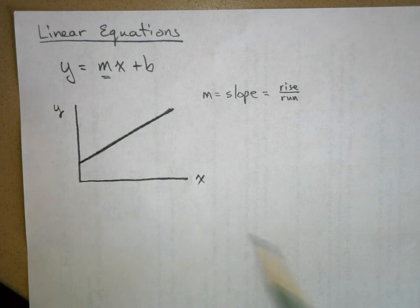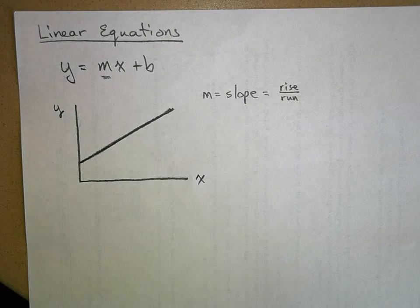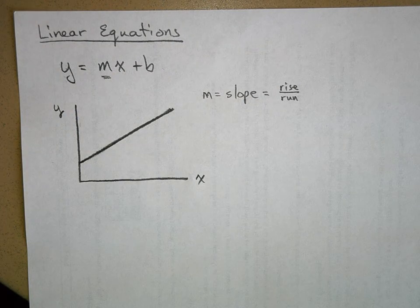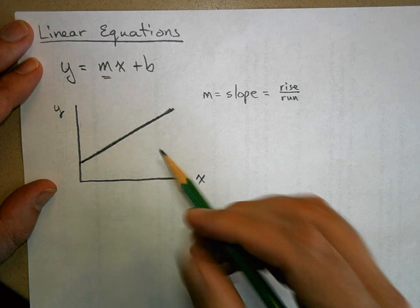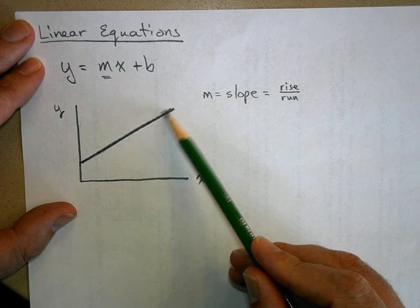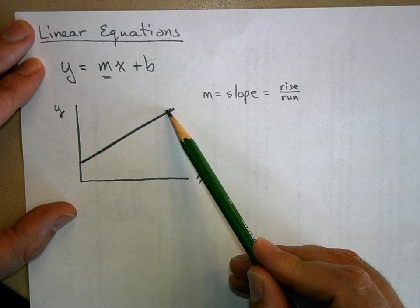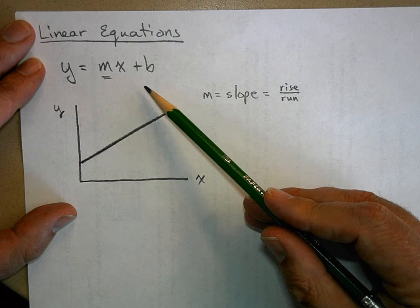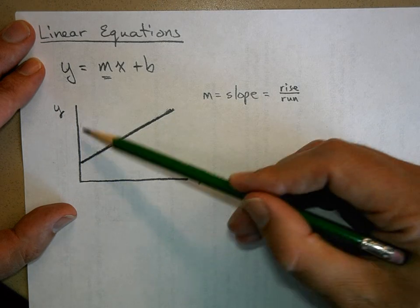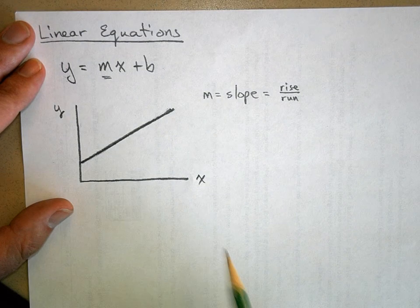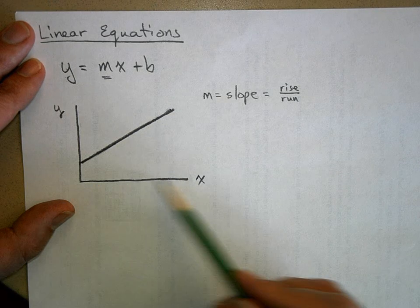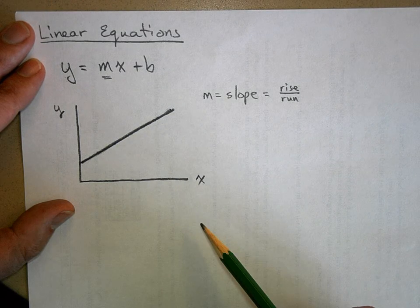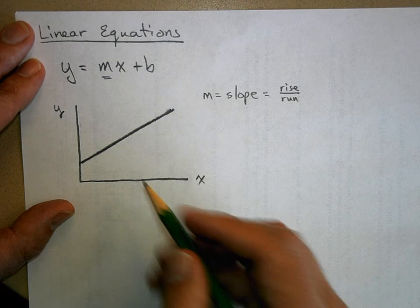Visually, slope is how steep the line is. The steeper the line, the faster Y is changing as X changes. The shallower it is, Y doesn't change very much as X changes. So that's what the slope means.